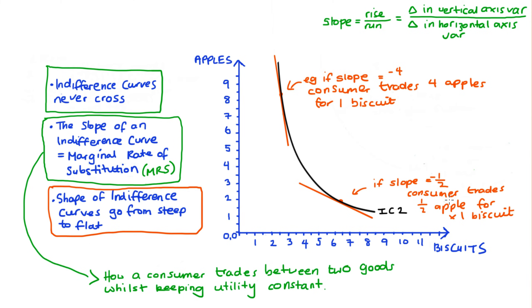And what this means is that I'm valuing my apples more and more as we go to the right of our indifference curve, because if you think about it, I'm willing to trade less and less apples for one biscuit as the slope gets flatter.